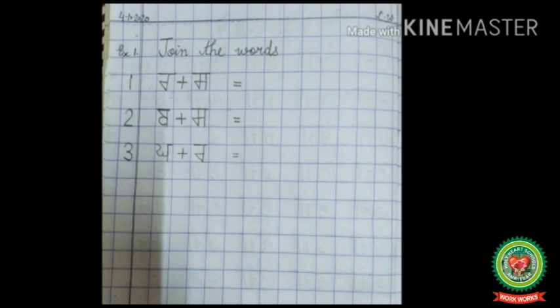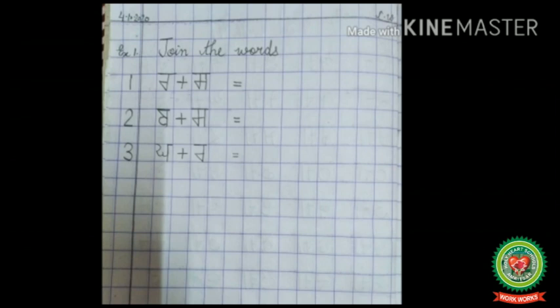Come to the second point and after leaving one box write down 'babba plus sasa,' then leave one box and write the equals sign. After the equals sign we will write the answers. Now come to the third point, leave one box, then write 'kaga plus rara,' then leave one box and put the equals sign.